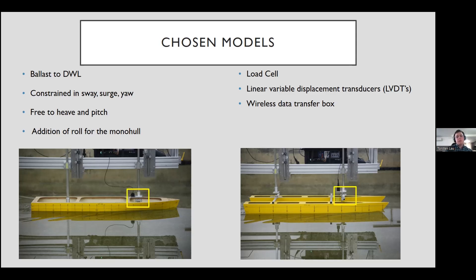In the yellow highlight boxes, you can see the load cells that we used. These allowed us to record the drag values for each run. The same load cell was used for both models and located on that forward post. We also used, highlighted in the green there, some LVDTs, better known as linear variable displacement transducers, to measure our running trim. And the last bit of equipment was this wireless data transfer box, which was new equipment we were testing out for AMC last year. It allowed us to get our data live and allowed for less cables and power to be run along the rig, making it all a bit simpler.